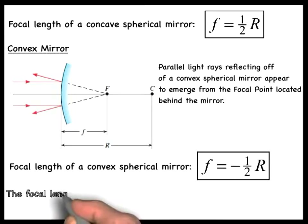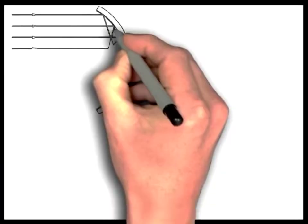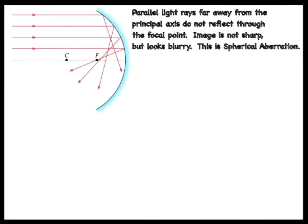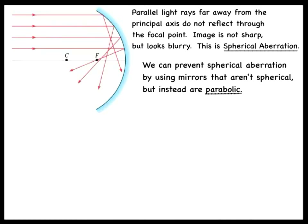The focal length relationships shown above are only valid for paraxial rays, which are rays that are close to the principal axis. While parallel rays close to the principal axis are all reflected through the focal point for a concave spherical mirror, those that are further from the axis are not, as the figure shows. This results in images that are not sharp, but are blurry. This effect is known as spherical aberration, and it affects convex mirrors as well. One can avoid spherical aberration by using mirrors that are not spherical, but instead are parabolic.